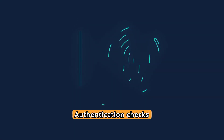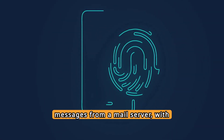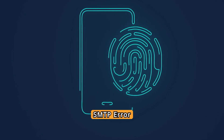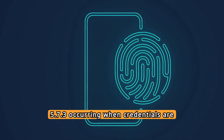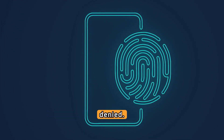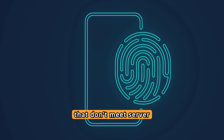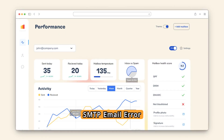Authentication checks whether a user can send messages from a mail server, with SMTP Error 535.5.7.3 occurring when credentials are denied. Reasons include mistyped passwords or security changes that don't meet server requirements.